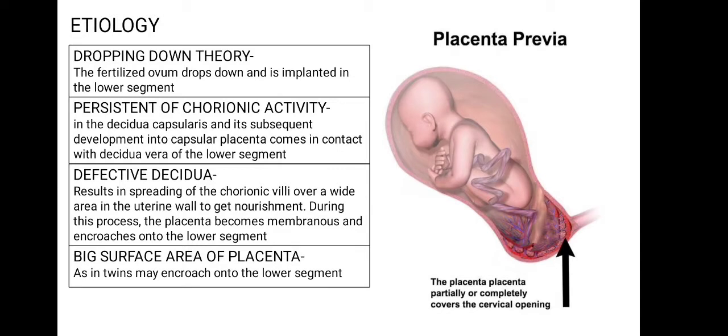The next theory is the persistence of chorionic activity in the decidua capsularis and its subsequent development into capsular placenta, which comes in contact with the decidua vera of the lower segment. In simple words, the decidua is the name given to a pregnant uterus — the capsular placenta comes in contact with the decidua vera of the lower segment and gets implanted there.